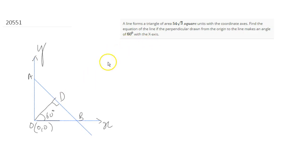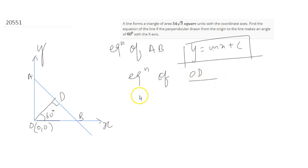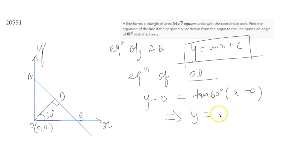Let's say the equation of line AB is y = mx + c. If we find out the values of m and c, then we are done with the equation of line AB. It is given that line OD is making an angle of 60 degrees with the x-axis. The equation of OD, passing through origin (0,0), has slope = tan(60°) = √3. So the equation of OD is y = √3·x.